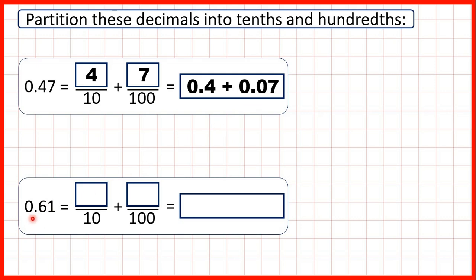Now let's partition 0.61. Again the first digit after the decimal point tells us how many tenths, so that's six tenths. And then the second digit after the decimal point tells us how many hundredths, so that's one hundredth. We can write the partition in decimal form as 0.6, because that shows six tenths, and 0.01 because that shows one hundredth.